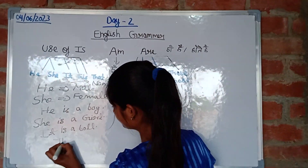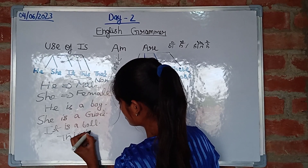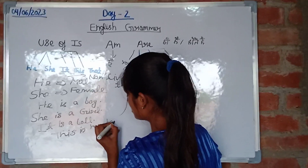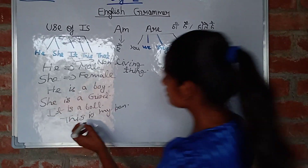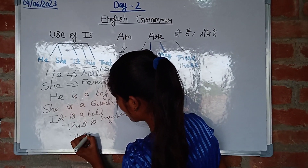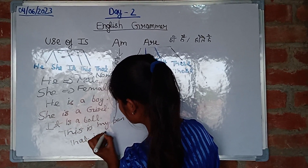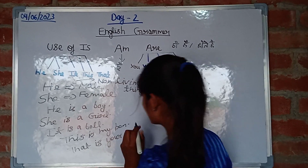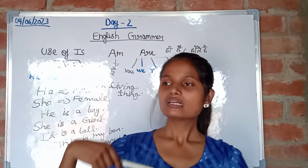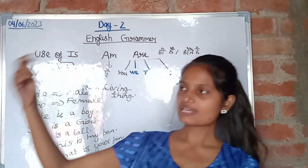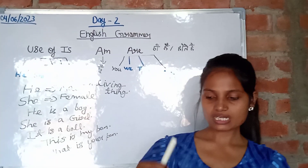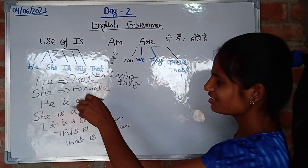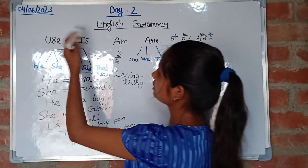'This' is used for nearby things: 'this is my pen.' 'That' is used for far places: 'that is your pen.' So 'this' refers to something nearest and 'that' refers to something far. I think the concept of this and that is clear now.